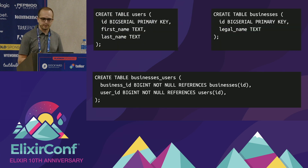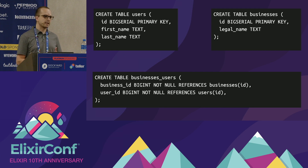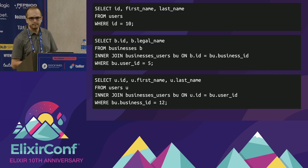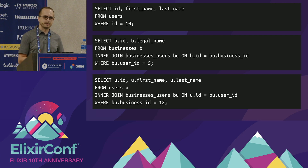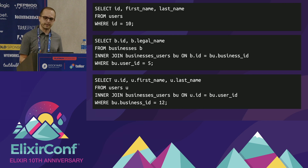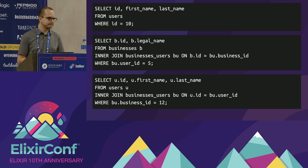We're going to create a small application with three simple tables: a users table that has a first and last name, a businesses table that has a legal name, and a businesses_users table which joins the two tables together. Within our system we are going to have three queries running: a select from users for a given ID, get all businesses associated with a certain user, and get all users associated with a given business. The second and third queries are an approximation of what Ecto will give you when doing a preload — not exact, but close enough for our purposes.